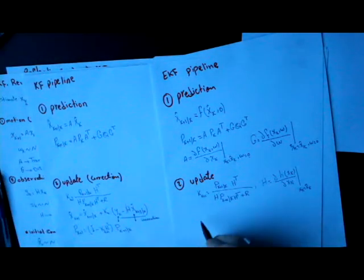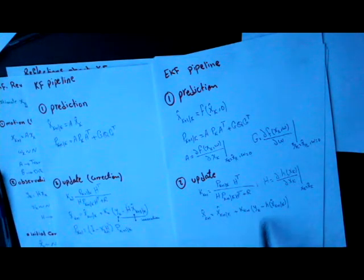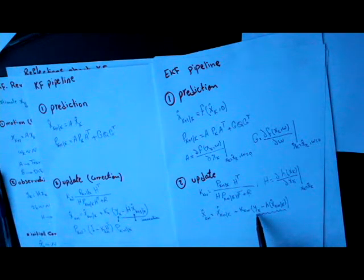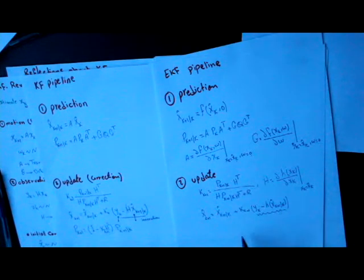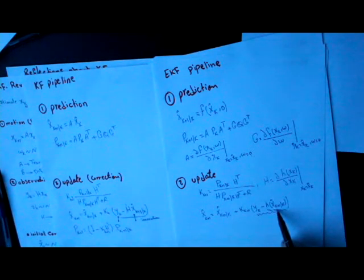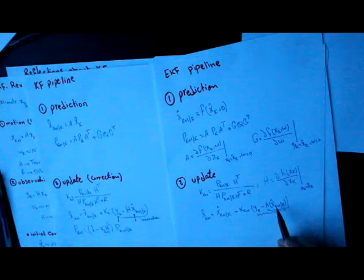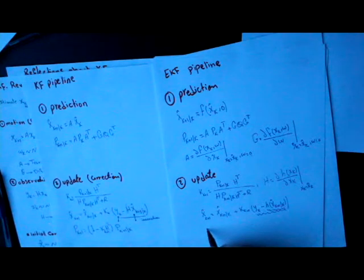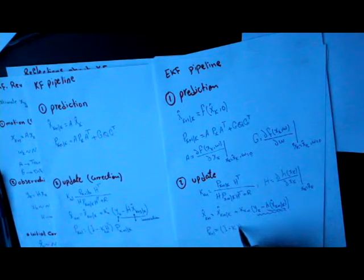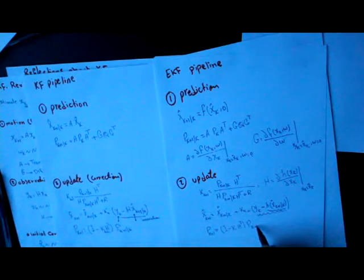After computing H, we can calculate the Kalman gain. Then the state vector is updated using the standard update formula. The innovation is the difference between the measured signal and what I predict to measure, calculated by plugging the predicted state vector into the observation model. After that, we update the covariance matrix using the standard formula.